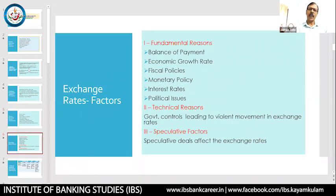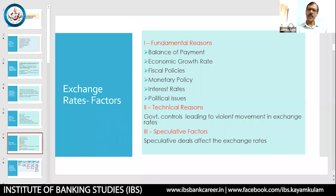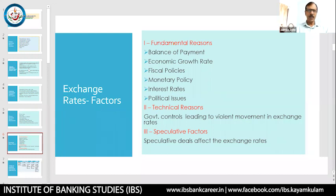Now, what factors affect the foreign exchange rate? First, what is exchange rate? Exchange rate is the rate at which a particular currency can be converted to another currency. For example, the exchange rate of US dollar in terms of Indian rupee is one USD equals 72 rupees. Or one GBP equals 1.2 USD. It is the equivalent of one currency in terms of another currency. This exchange rate depends on three major factors: fundamental reasons, technical reasons, and speculative factors.